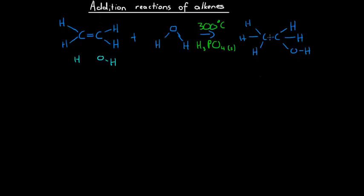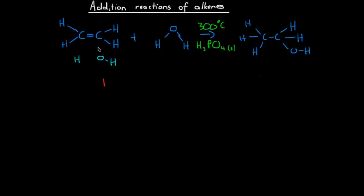Now we're going to look at the different possible products that can be created. Obviously, if we're adding something like chlorine, each chlorine atom goes to each of the carbons involved in the double bond. However, if we add something like hydrochloric acid, the hydrogen can go to one side and the chlorine to the other — or they could swap sides. So that becomes very important when we get to more complex molecules, as it determines the different possible products.